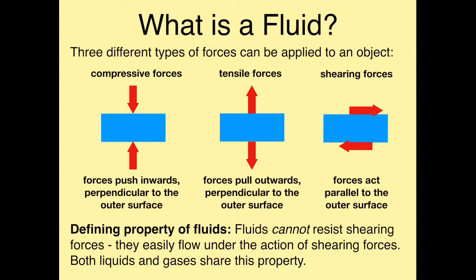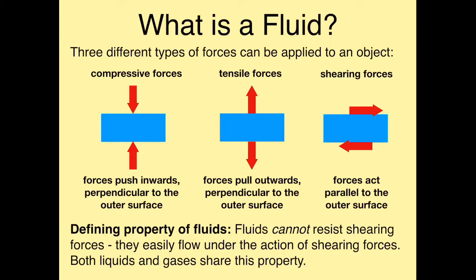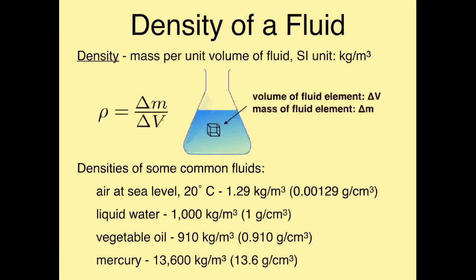What does this have to do with fluids? A defining property of fluids is that they cannot resist shearing forces. If you have a fluid like water and you apply a shearing force, the fluid is just going to start flowing — they easily flow under the action of a shearing force. Both liquids and gases have this property, so we consider both to be fluids by this definition. Something solid would not be considered a fluid because if you apply a shearing force, it will move very little and won't start flowing.